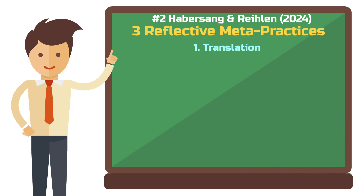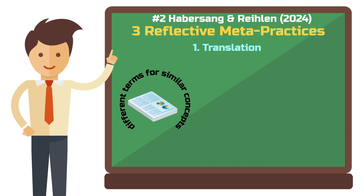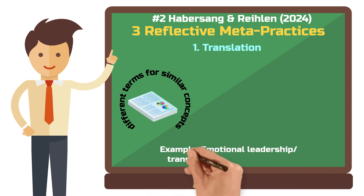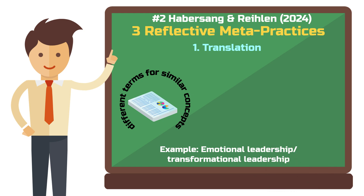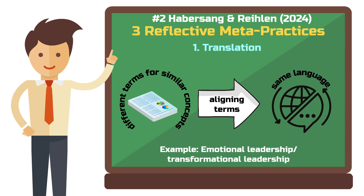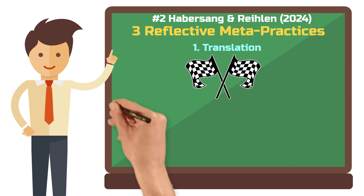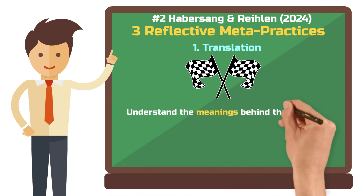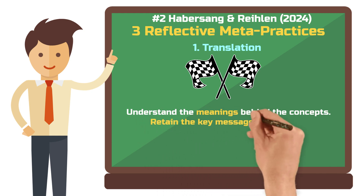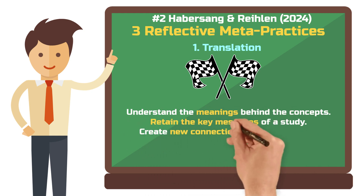Different studies often use varied terminology for similar concepts. For example, one study might discuss emotional leadership, while another refers to transformational leadership. Translation involves aligning these terms into a shared language so the studies can be compared effectively. This process goes beyond mere word alignment — it's about understanding the underlying meaning of each concept. Your goal is to preserve the essential insights of each study while creating connections between them.